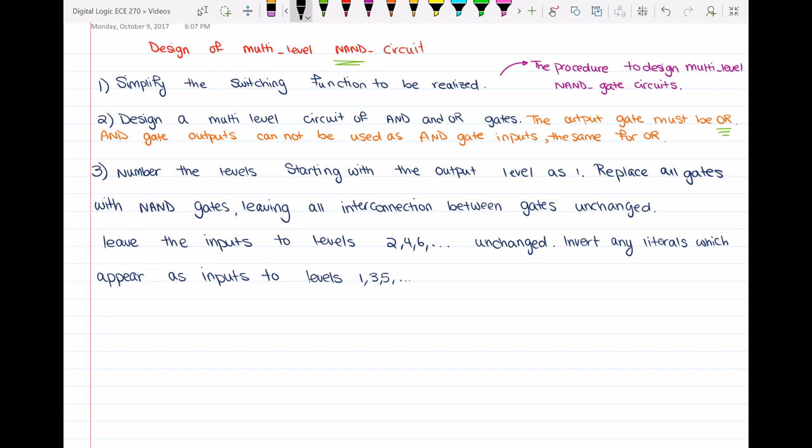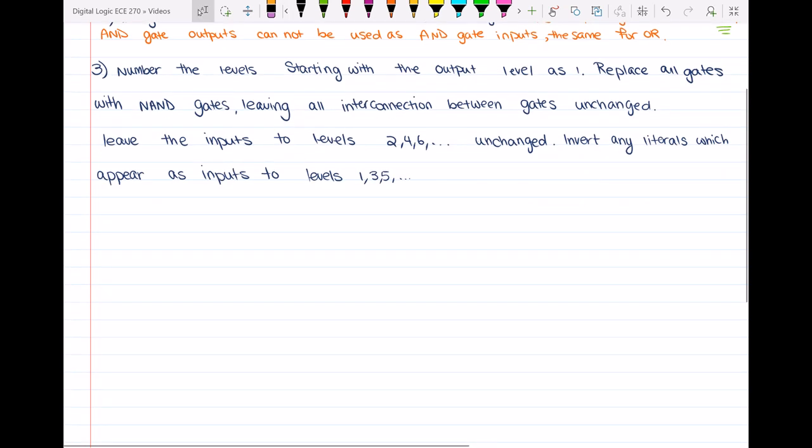Then what we have to do is when we design the circuit with AND and OR gates, we have to number the levels starting with the output level as one. So I will go ahead and start the example and then talk about step number three more when we are in the example.